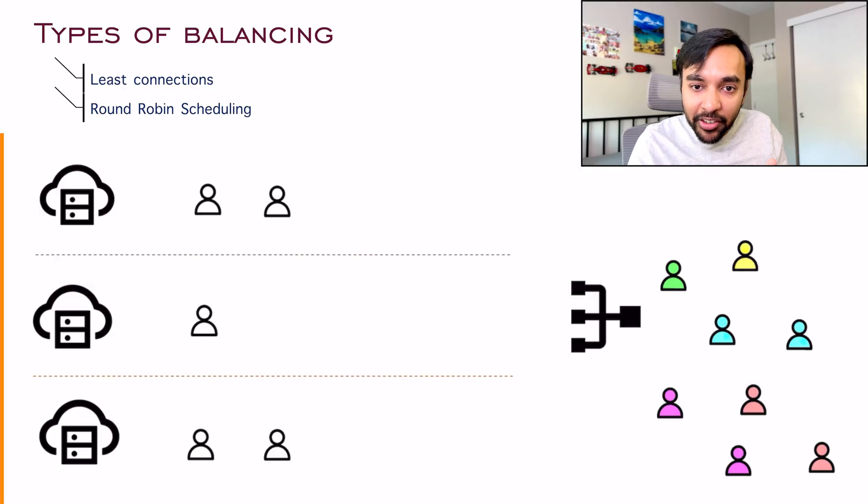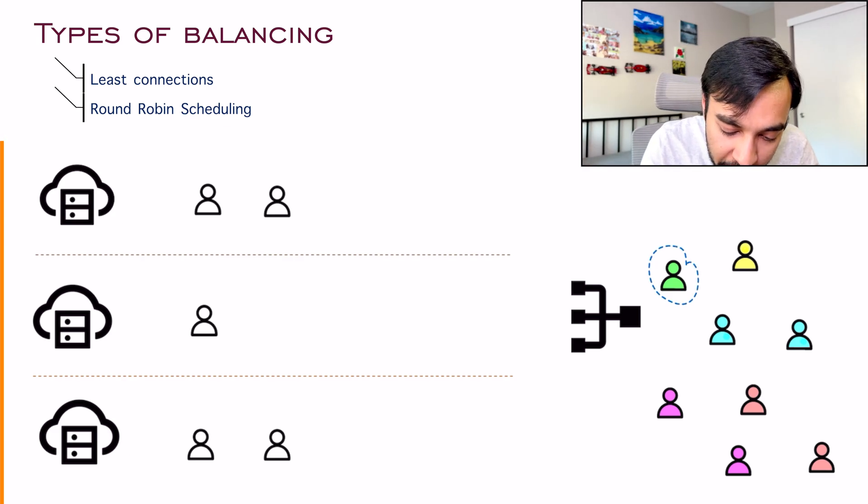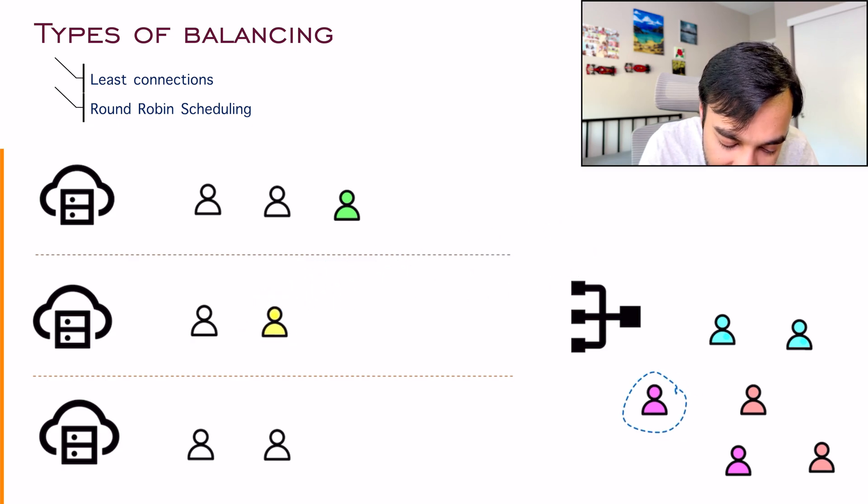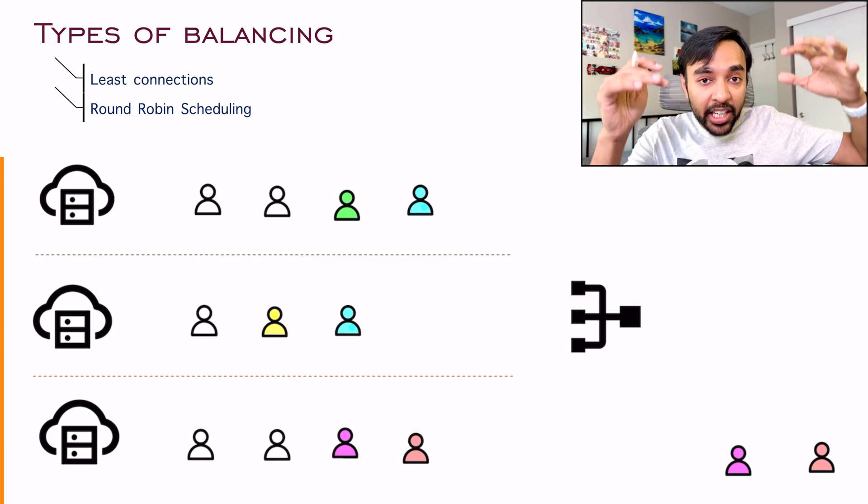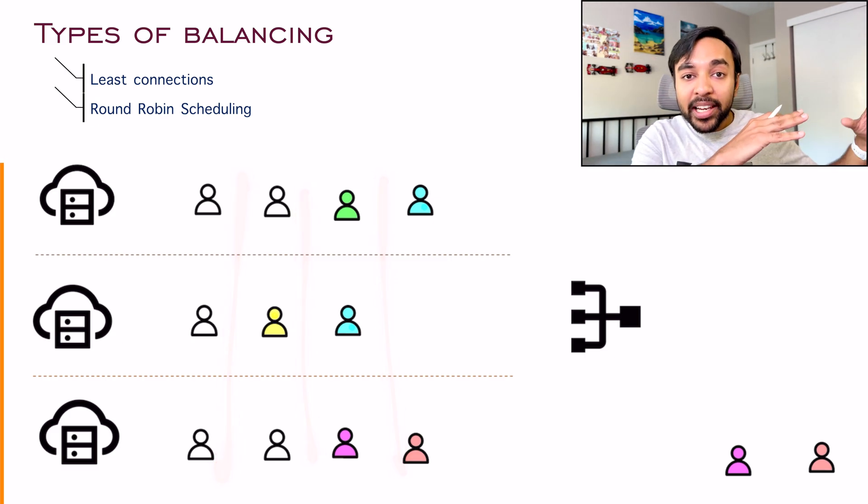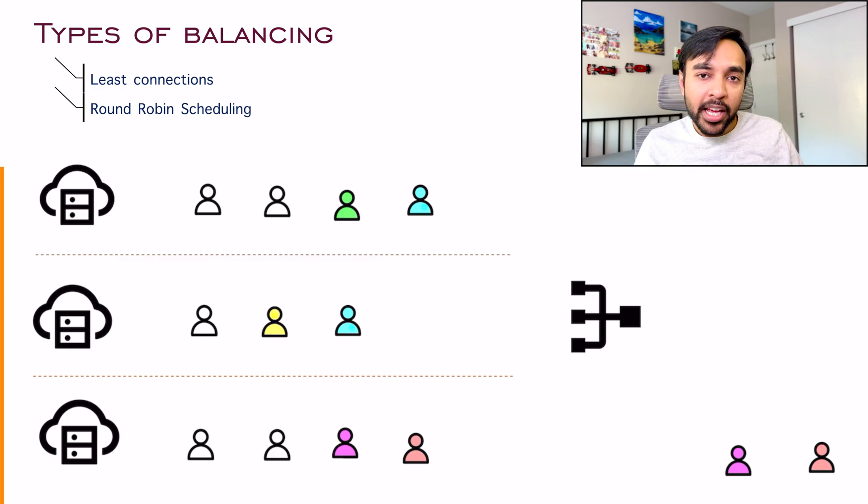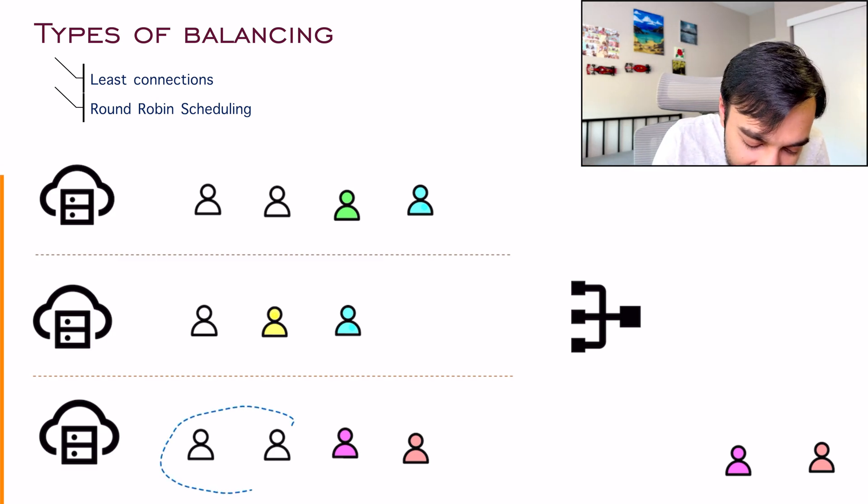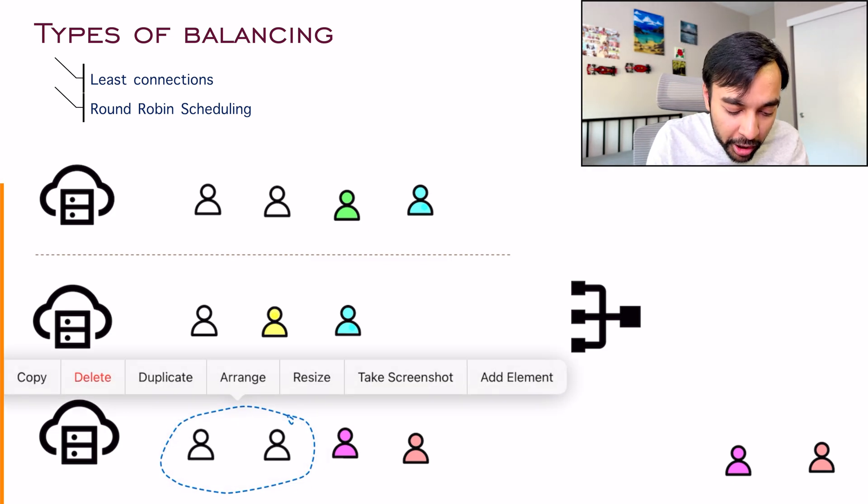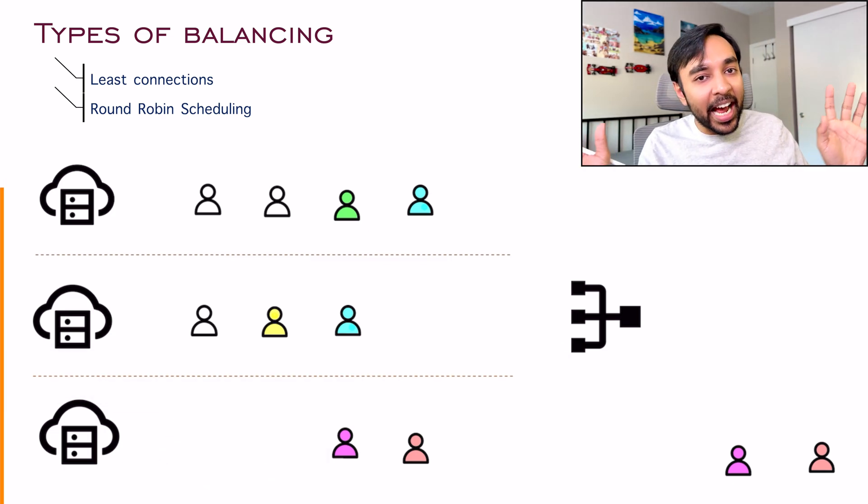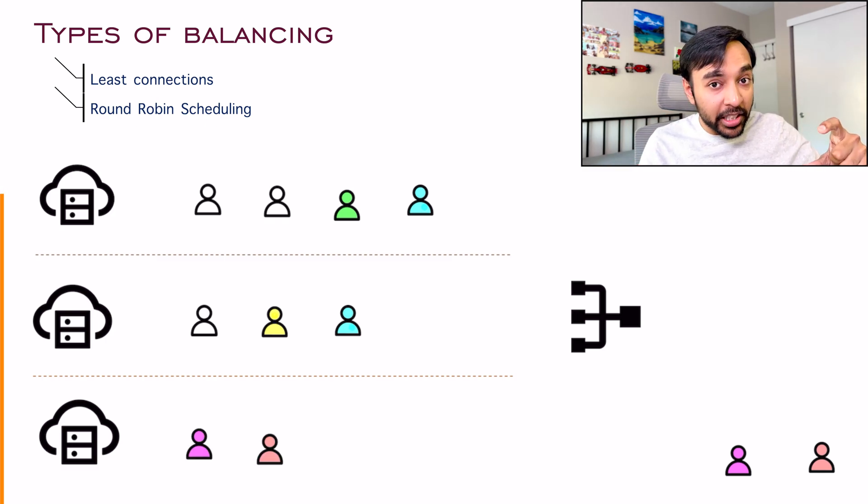I have all of these servers available and these are my clients. So by a round robin scheduling, what I can do is I can keep on allotting all of these clients one by one. So in a way, this is trying to keep the load balanced between each of the servers. There can be one tiny problem with this approach. Let us say that these two users, they had very tiny requests. They wanted to download an image. They did it and they are done.